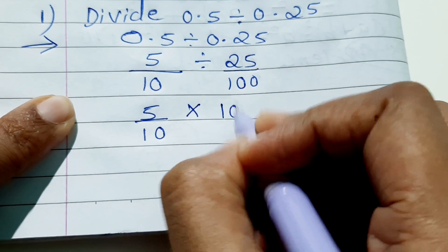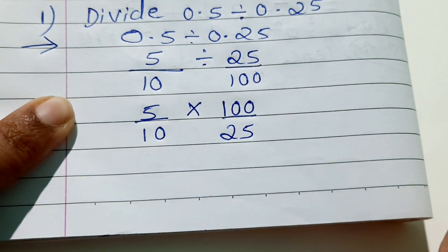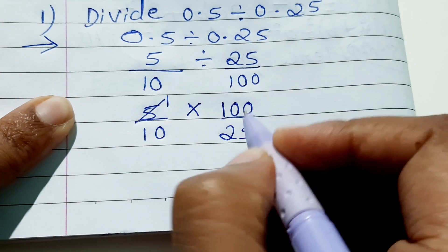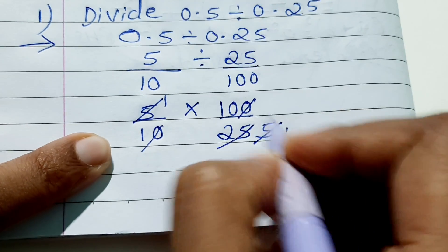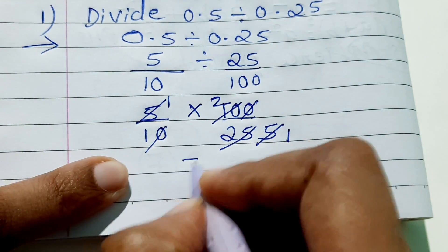Take the reciprocal like this way: 100 upon 25. You can cancel this. 5 ones are 5, 5 fives are 25. The zeros will get cancelled. 5 ones are 5, 5 twos are 10. So what will be your answer?